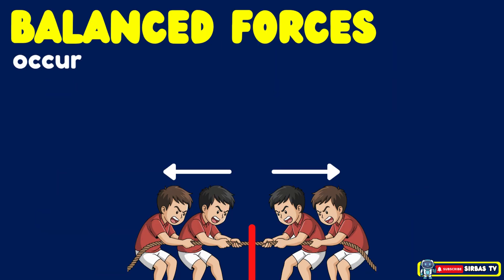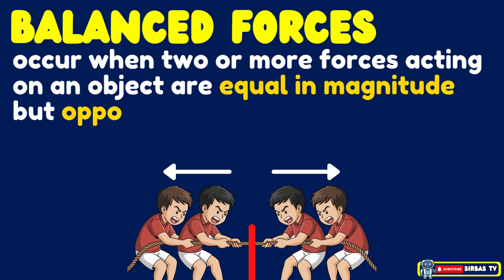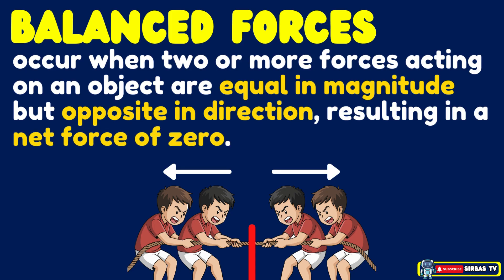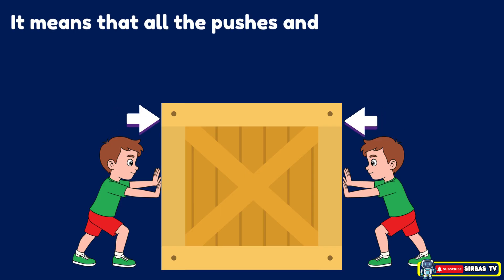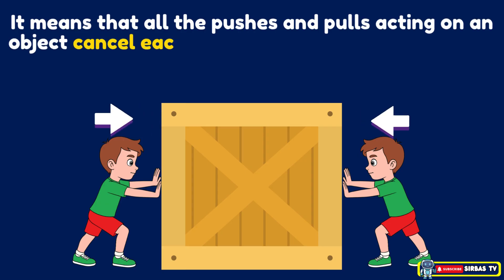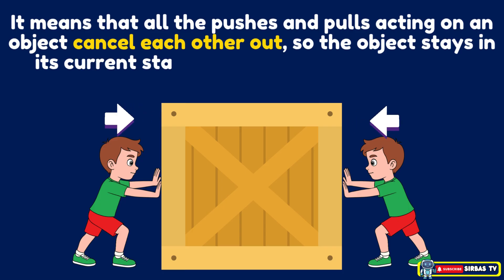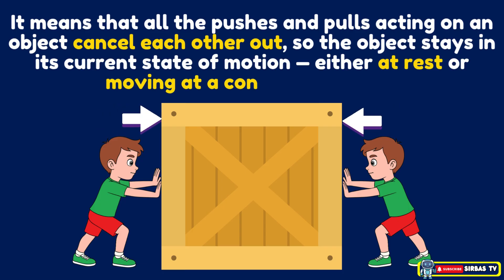Balanced forces occur when two or more forces acting on an object are equal in magnitude but opposite in direction, resulting in a net force of zero Newtons. This means that all the pushes and pulls acting on an object cancel each other out, so the object stays in its current state of motion — either at rest or moving at a constant velocity.